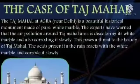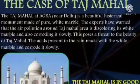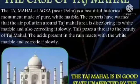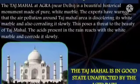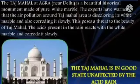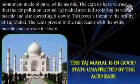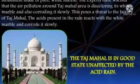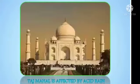The Taj Mahal at Agra is a beautiful historical monument made of pure white marble. Experts have warned that air pollution in the Taj Mahal area is discoloring its white marble and corroding it slowly, posing a threat to its beauty. The acids present in the rain react with the white marble and corrode it. Pictures are shown comparing the Taj Mahal in its good state versus its state affected by acid rain.